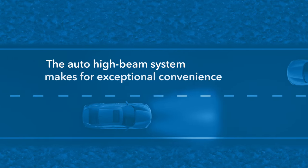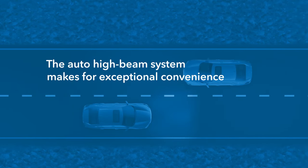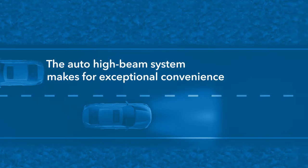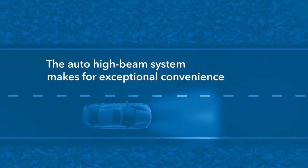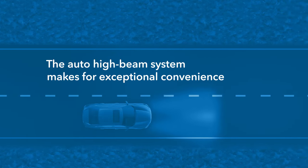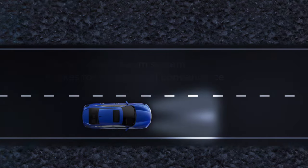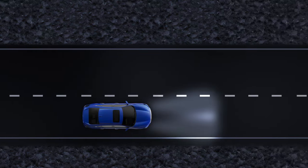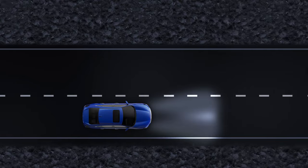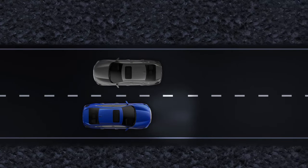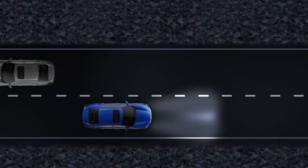When driving at night, the auto high beam system can automatically turn on the high beams when its windshield-mounted camera detects no vehicles ahead, then return to the low beams when vehicles ahead are detected. A great convenience.